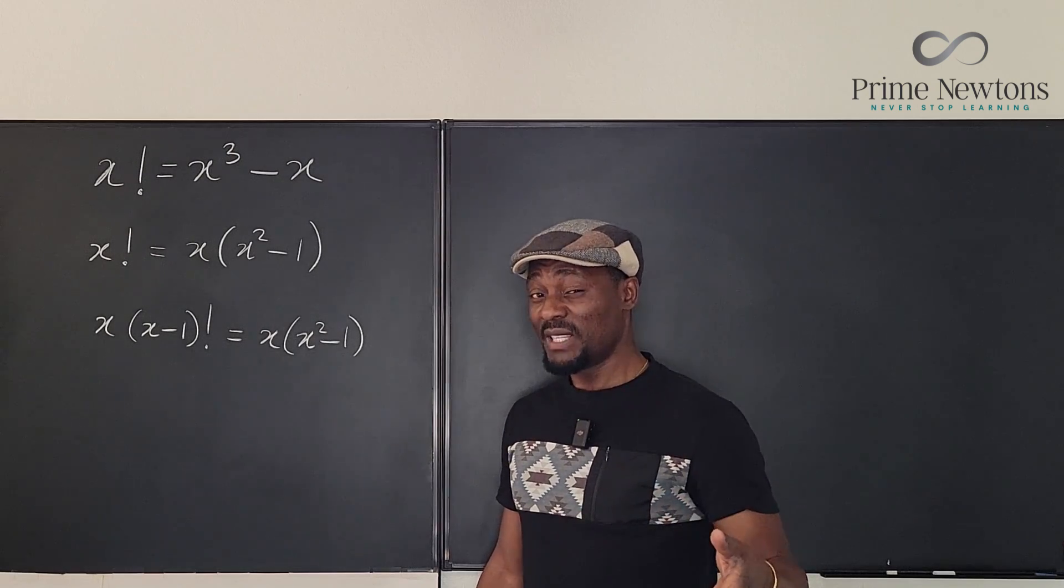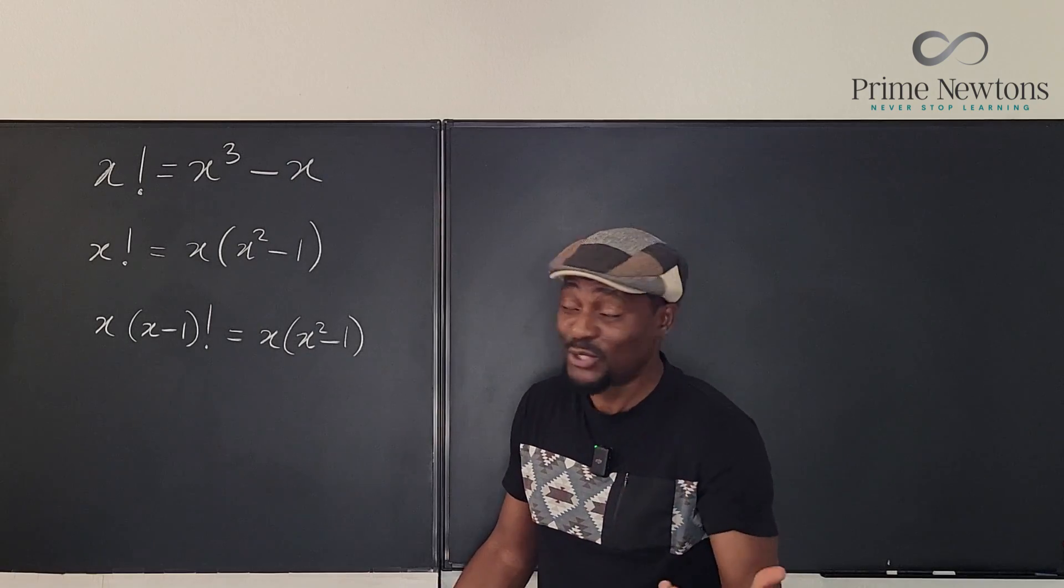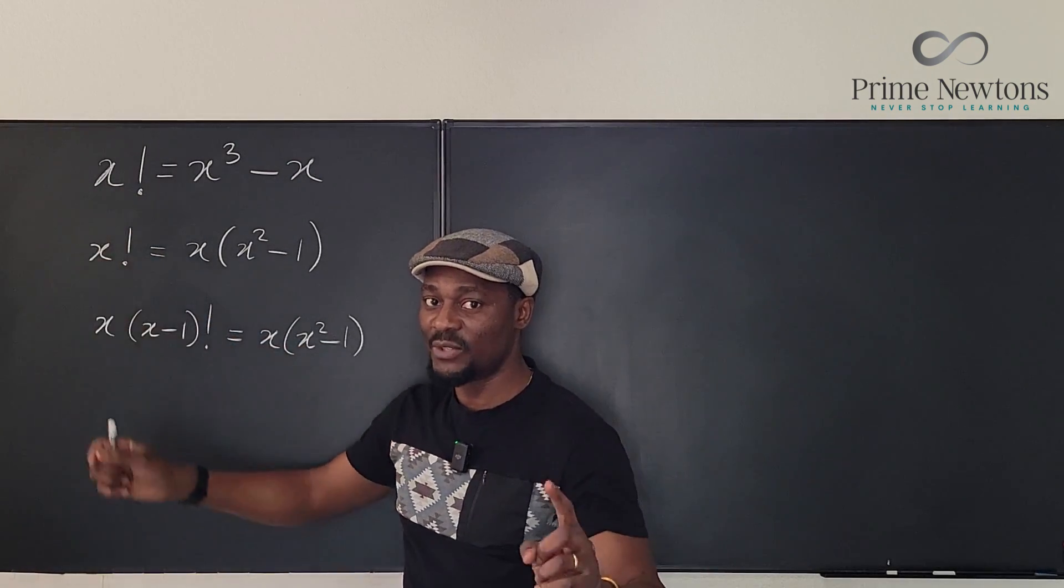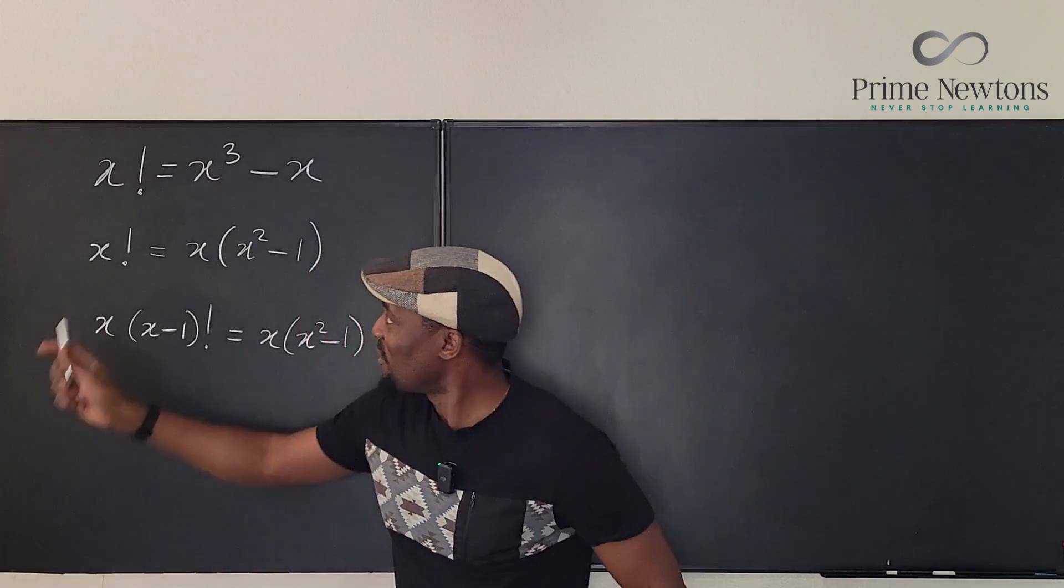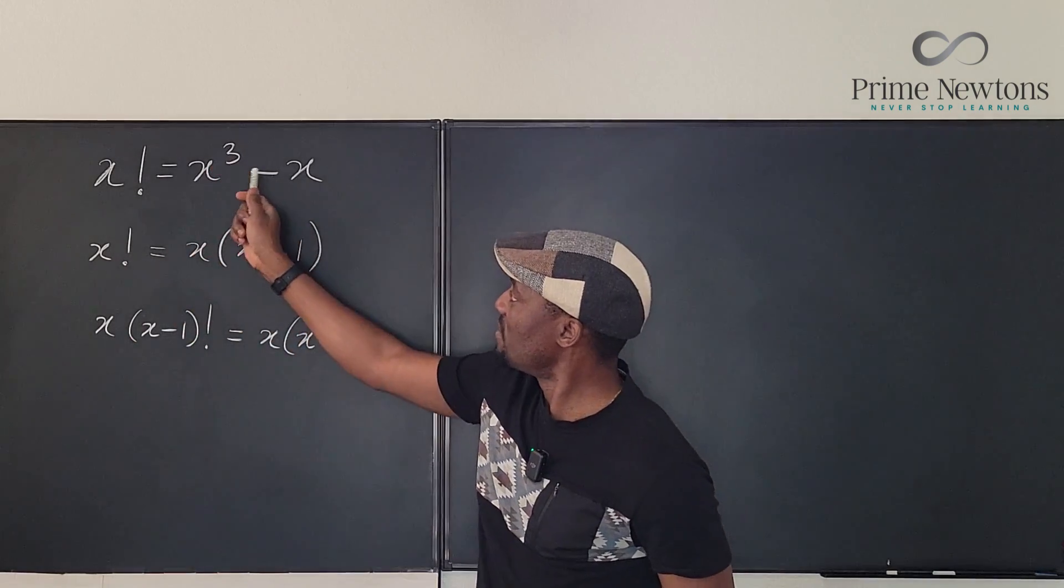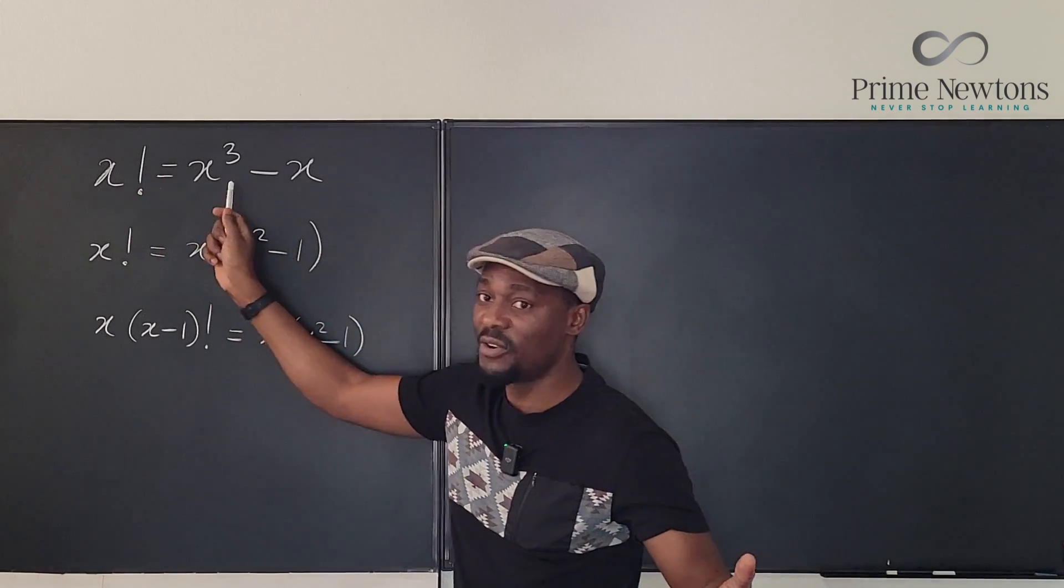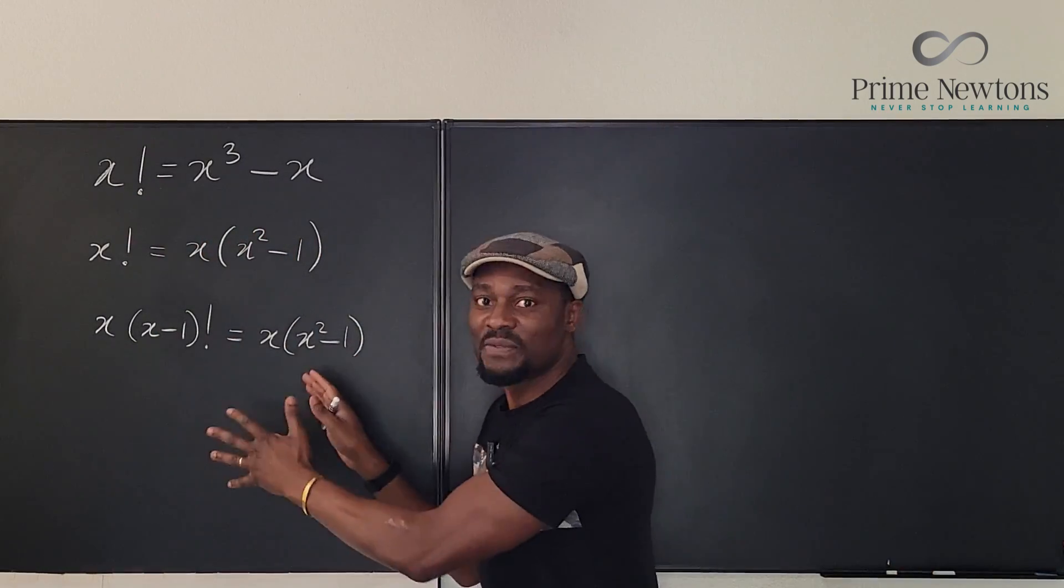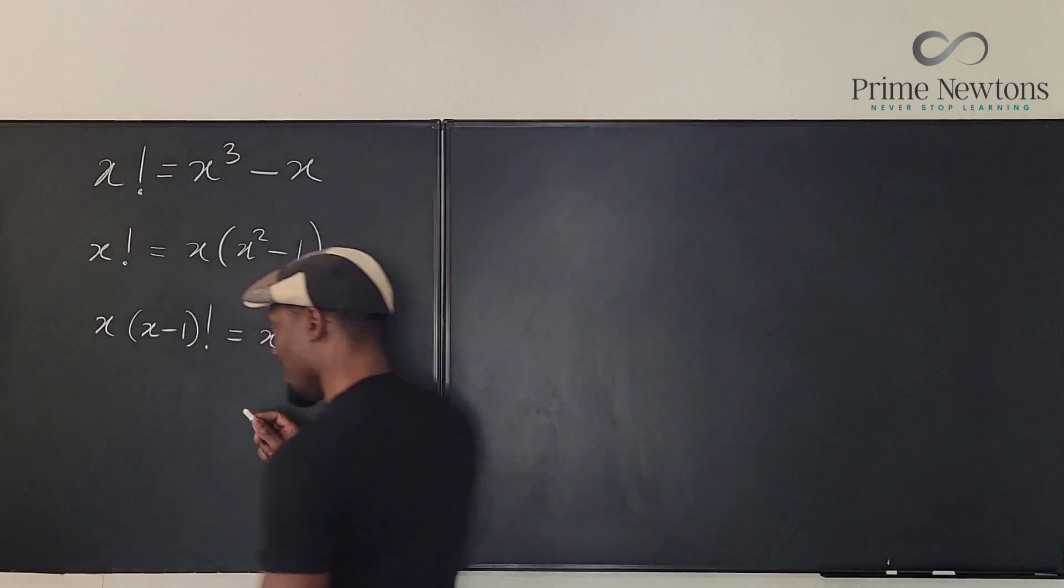Well, if we want to be sure that x is not 0, all we have to do is go back up here and say, what is 0 factorial? Well, 0 factorial is 1. We already showed that when I gave those examples. So the left hand side is 1. What would the right hand side be? It's going to be 0 cubed minus 0, which is 0 minus 0, which gives us 0. So 1 equals 0 is not a true statement, which means x is not 0. So we confidently know that x cannot be 0 and therefore we can divide both sides by x. So let's write that.